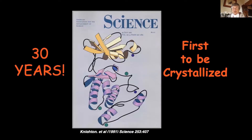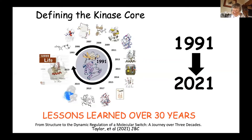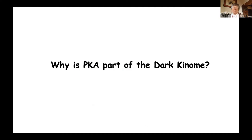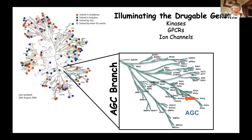This is a special year — 30 years ago we solved the structure of the first protein kinase to be crystallized. PKA has been used as a model, a prototype for catalysis; we've crystallized all the catalytic states and used it for defining spines. So why on earth is PKA part of the dark kinome? It's obviously very at the top of the bright illuminated kinases. The reason is that we and others just haven't appreciated the importance of this isoform.